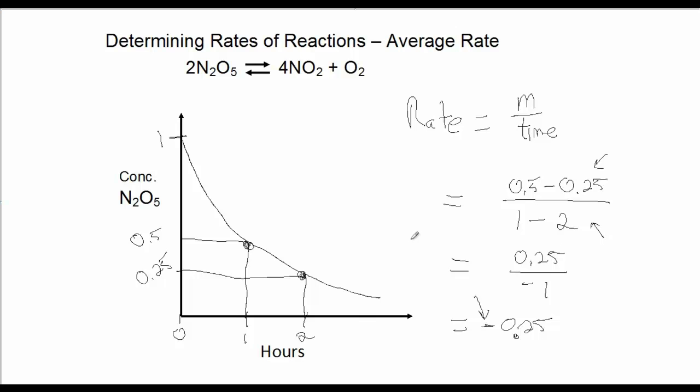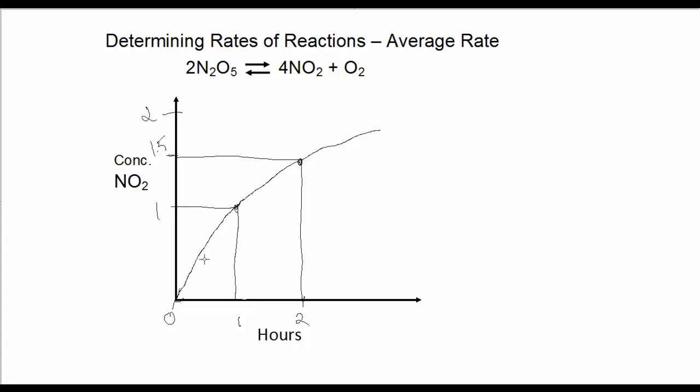Next, I'll show you how to approach it if we're considering a product. For NO2, the graph would look something like this. Where at T equals 0, the concentration is 0, and the concentration increases gradually over time.